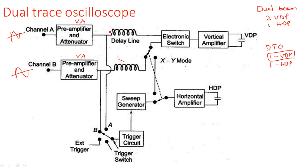The output of the pre-amplifier before being applied to the vertical deflection plates must pass through a delay line. This delay line is present for both channels. The purpose of the delay line is to hold the signal at the vertical plates until the horizontal deflection system is ready. The horizontal system involves three stages: trigger pulse generator, sweep generator, and horizontal amplifier — which takes longer than the vertical amplifier path alone.